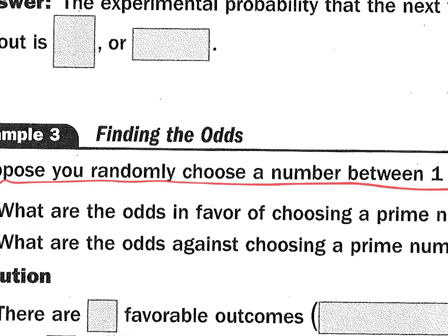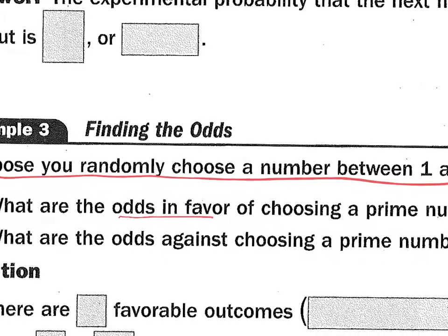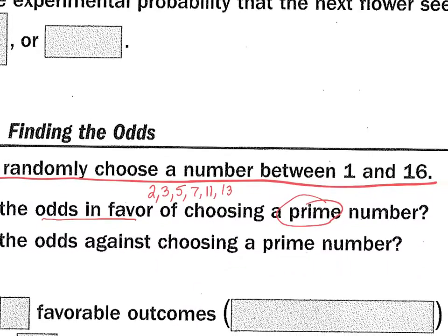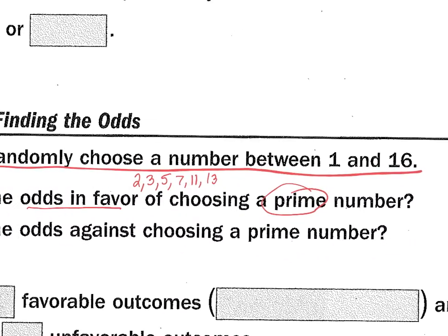Suppose you randomly choose a number between one and 16. What are the odds in favor of choosing a prime number? Well, it's favorable over unfavorable. What are the prime numbers from one to 16? Is one prime? One is neither prime nor composite. Is two prime? Is three prime? Is four prime? No. Five? Yes. Six? No. Seven? Yes. Eight? No. Nine? No. Ten? No. Eleven? Yes. Twelve? No. Thirteen? Yes. Fourteen? No. Fifteen? No. Sixteen? No. How many favorable outcomes do we have here? Six.